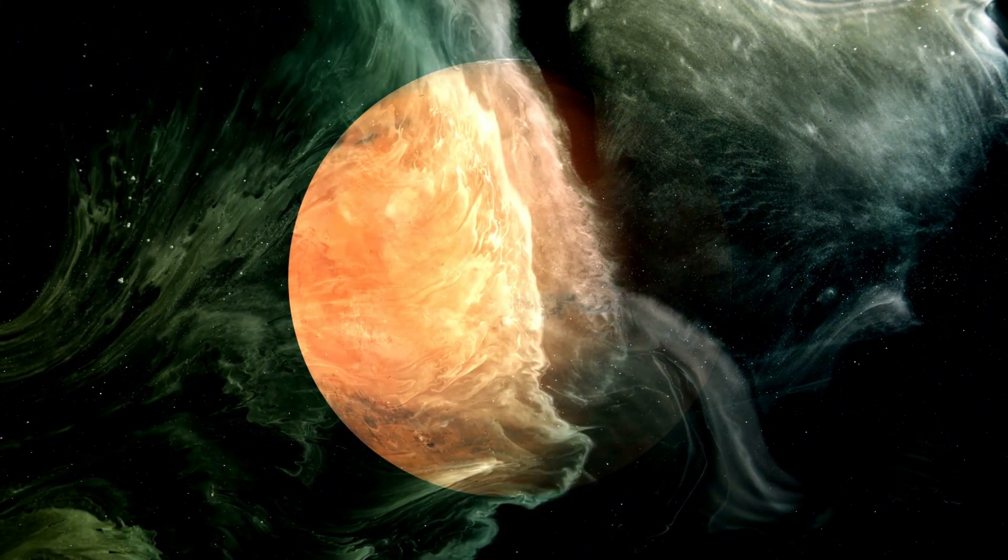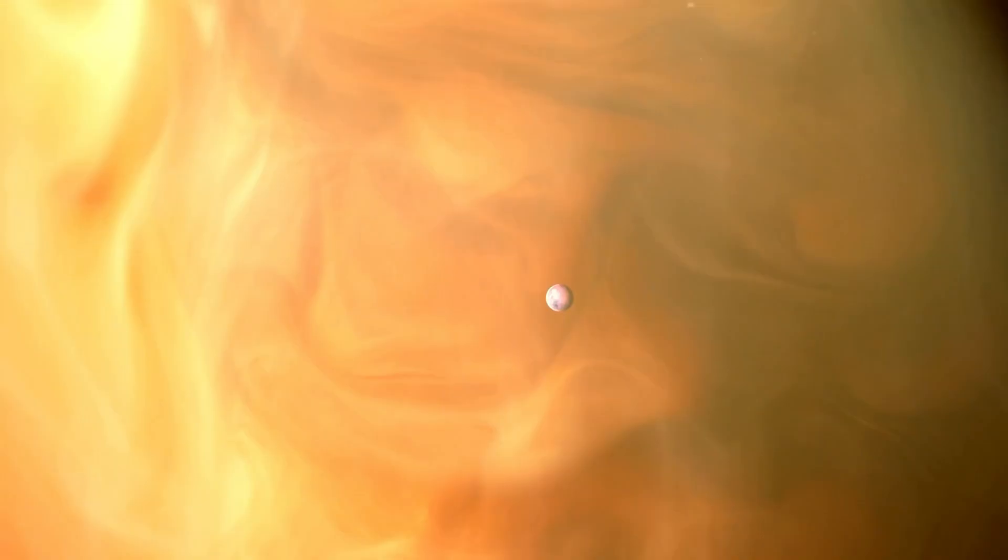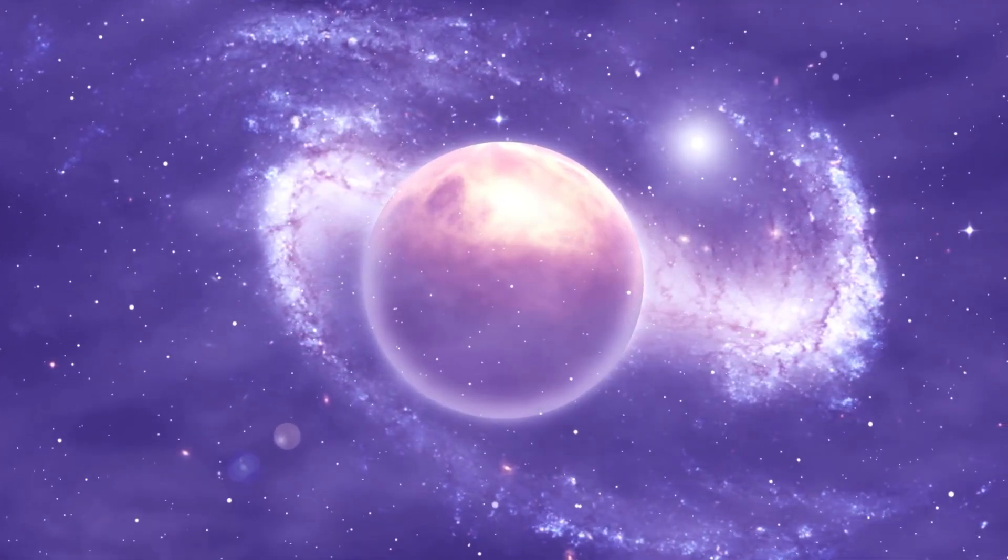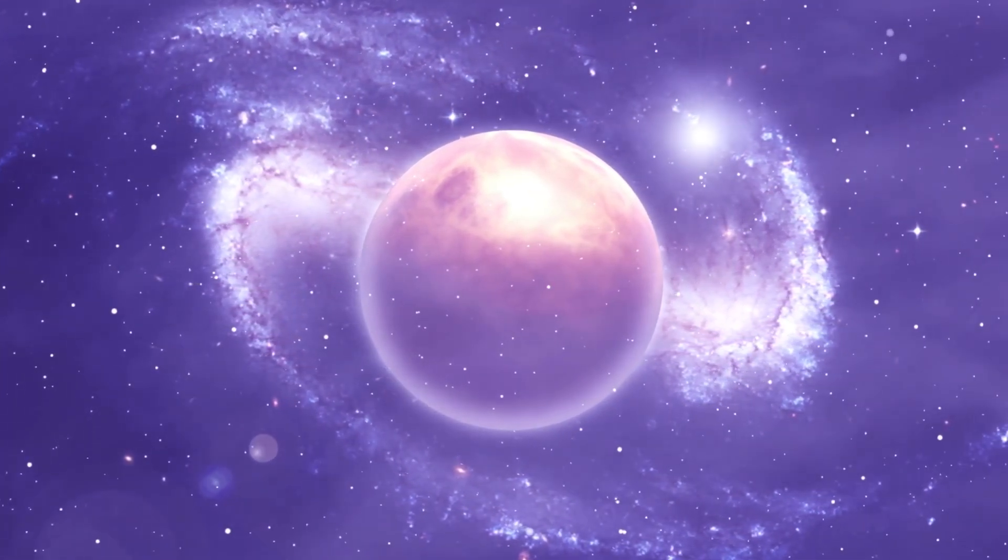Another groundbreaking innovation is JWST's five-layer sunshield, which keeps the telescope's instruments at a constant temperature of about minus 233 degrees Celsius. This ultra-cold environment is crucial for detecting faint infrared signals without interference from the telescope's own heat. Each layer of the sunshield is made of a specialized material called Kapton, coated with aluminum to reflect sunlight.